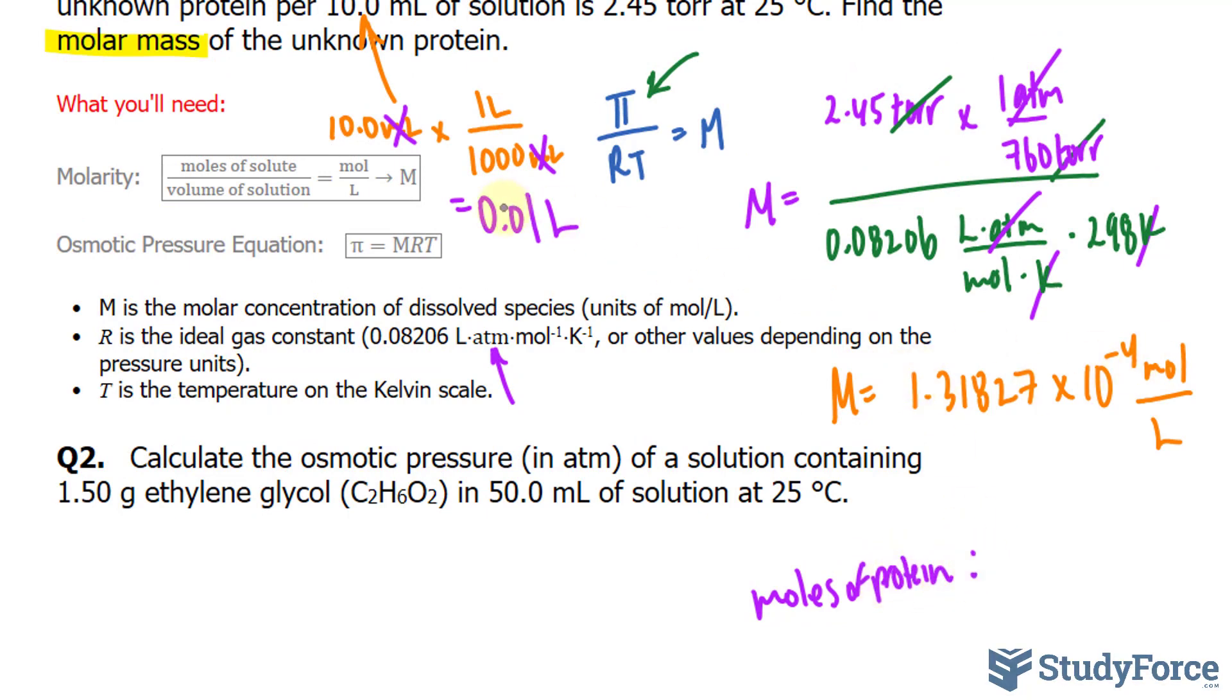So multiplying this number to 0.01, that makes this into negative 6. So 1.31827 times 10 to the power of negative 6 moles of this protein.